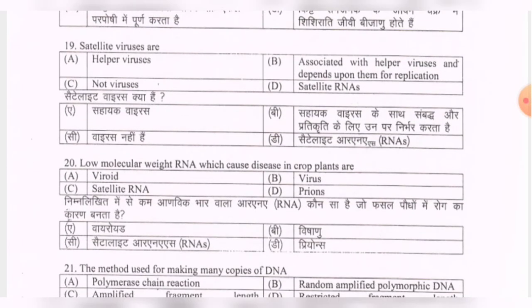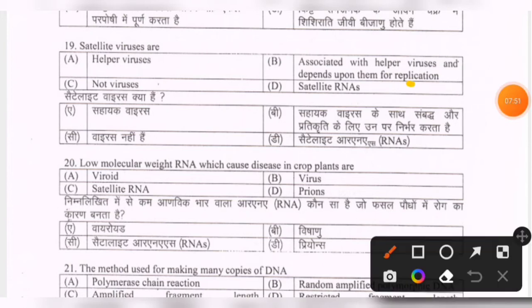Next question: satellite viruses are — options are helper viruses, associated with helper viruses and depend upon them for replication, not viruses, or satellite RNAs. The correct option is B — they are associated with helper viruses and depend upon them for replication.